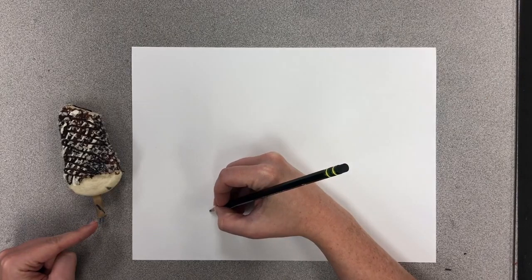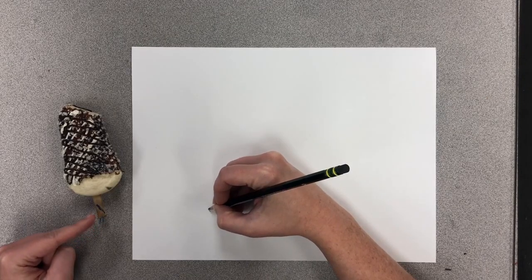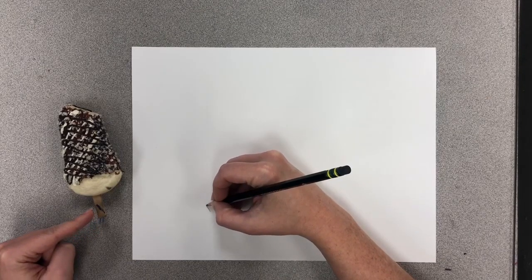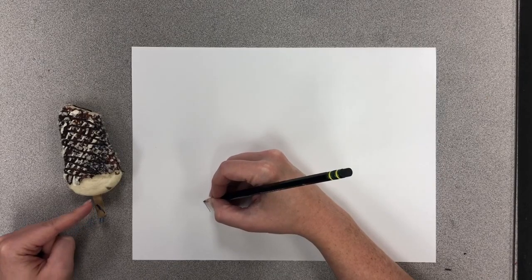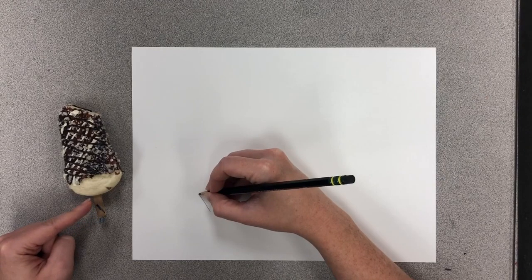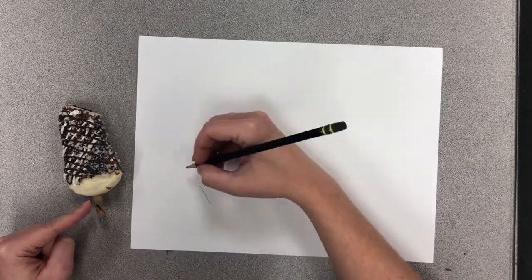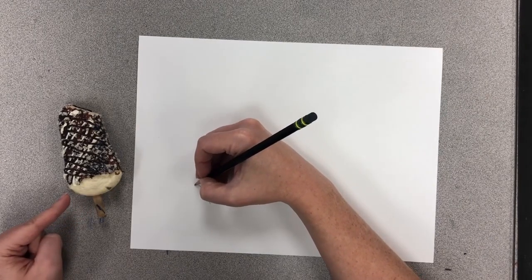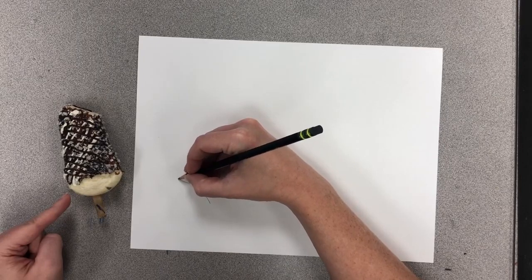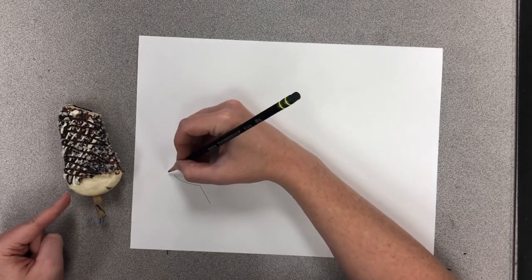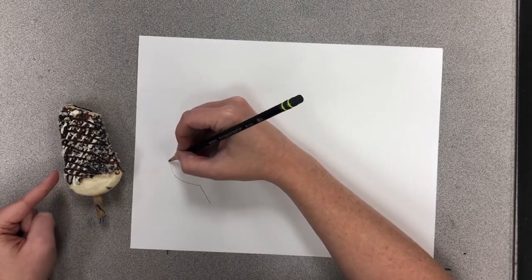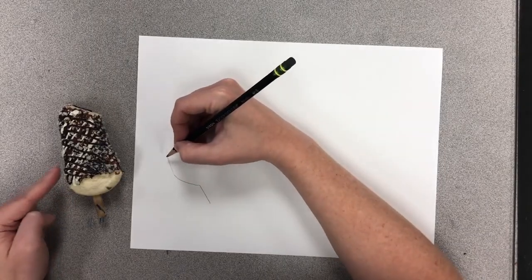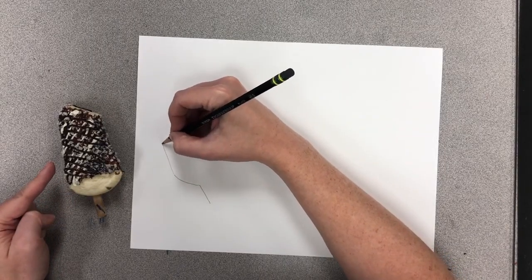And I'm going to start to slowly move my way up to make the base of the stick there. Then I notice, oh this bottom part comes out, and I'm going to take it all the way up. So I'm looking very, very carefully at the object I'm drawing.